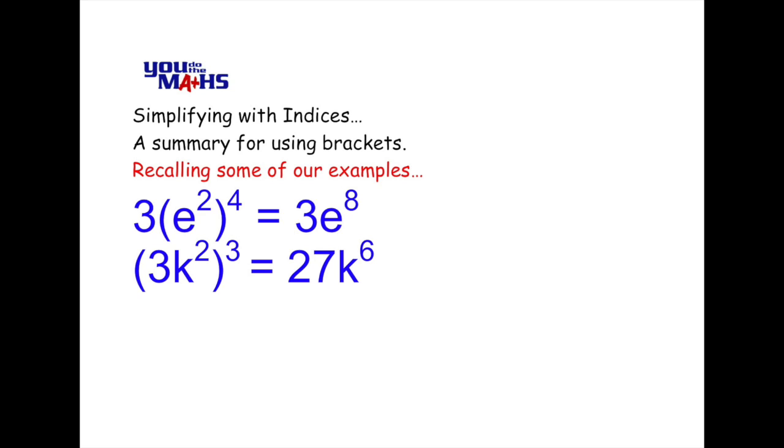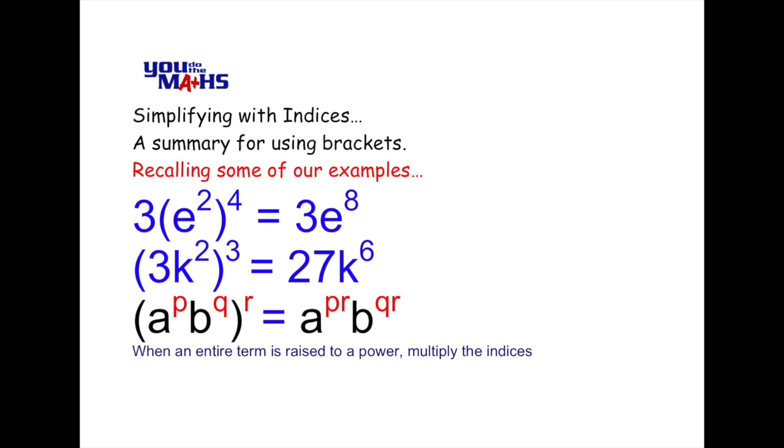What happens is that if you've got expressions inside a bracket and they're all raised to a power, it's the same as multiplying the indices. So as we saw before, 2 times 4 is 8 and 2 times 3 is 6. So when an entire term is raised to a power, everything in the bracket, we multiply the indices.